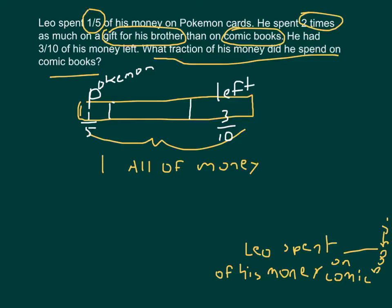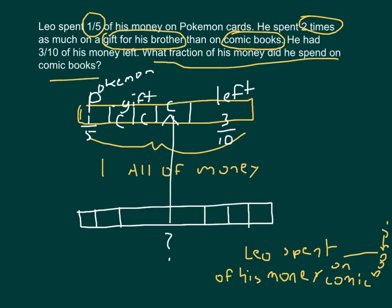He's purchasing a gift for his brother and comic books. He spends two times as much on the gift than on comic books, meaning the gift is twice the size of the comic books portion. If we call the comic books amount C, then the gift costs 2C — or two portions of C. One-fifth equals two-tenths, and with three-tenths left, the remaining middle portion is five-tenths, or one-half.